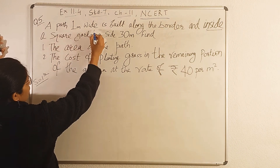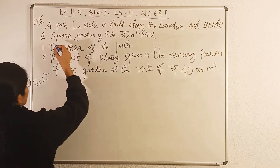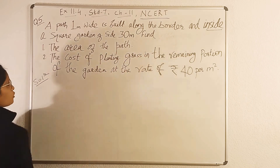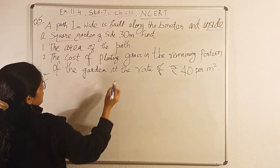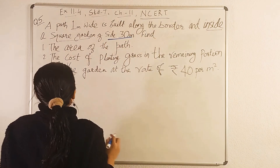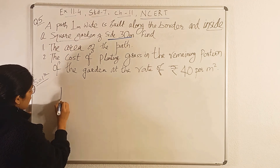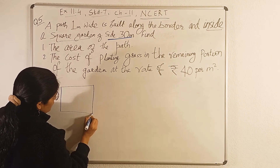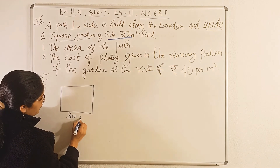The question is: a path 1 meter wide is built along the border and inside a square garden of side 30 meter. So first of all, there is a square garden and the length of that square garden is 30 meter.